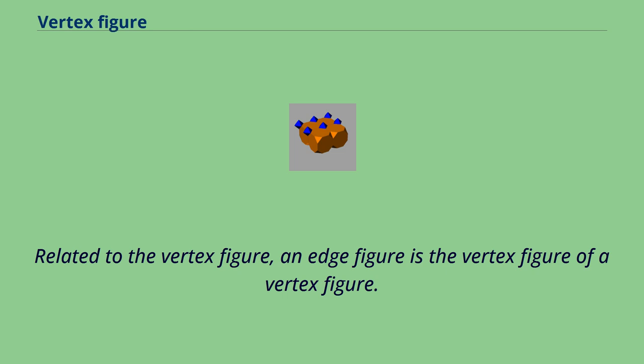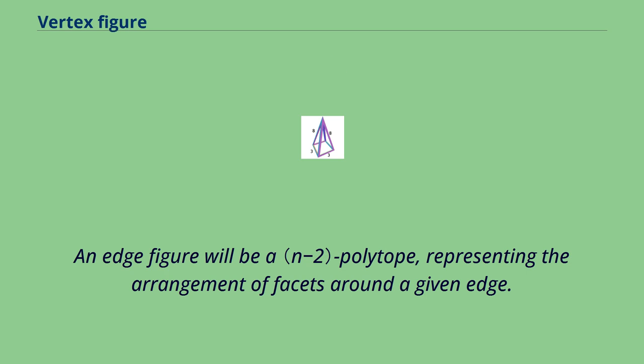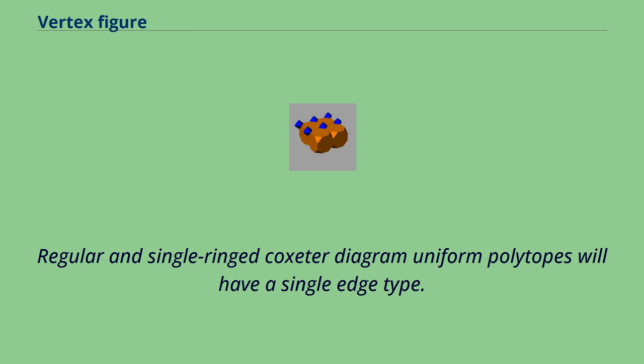Related to the vertex figure, an edge figure is the vertex figure of a vertex figure. Edge figures are useful for expressing relations between elements within regular and uniform polytopes. An edge figure will be a polytope representing the arrangement of facets around a given edge. Regular and single-ring Coxeter diagram uniform polytopes will have a single edge type.